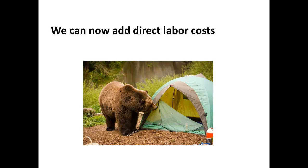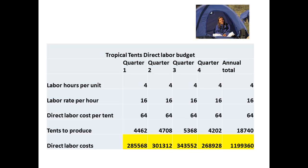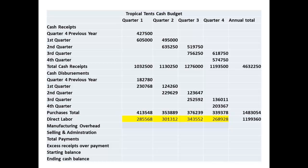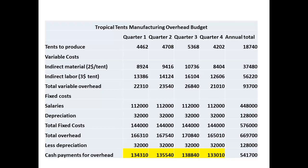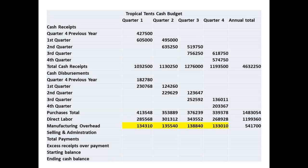Our next step is to add the direct labour costs. These figures are taken from the direct labour budget and entered directly onto the cash budget sheet. The cash payments for overhead are then entered, highlighted from the manufacturing overhead budget sheet and shown again on their entry to the cash budget.